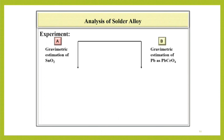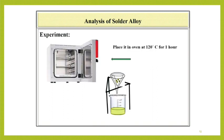Now, we have obtained here two parts. Part A is for gravimetric estimation of SnO2 and part B is for gravimetric estimation of lead as PbCrO4.